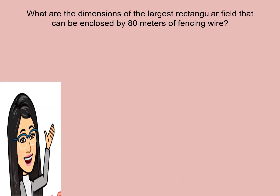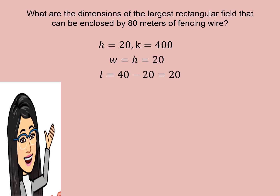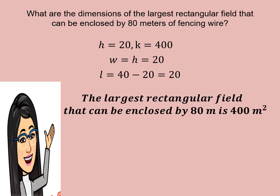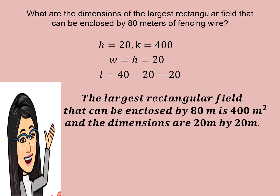Using the vertex, we obtain the width, which is the H value, equal to 20. So if the width is equal to 20, the length is 40 minus 20, which is also 20. Therefore, the largest rectangular field that can be enclosed by 80 meters of fencing has an area of 400 square meters, and the dimensions are 20 meters by 20 meters.